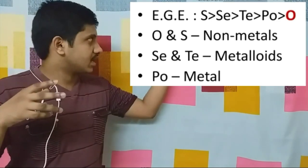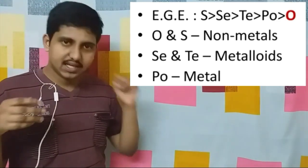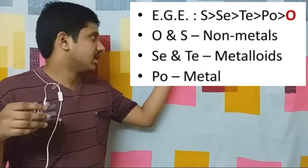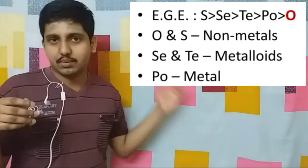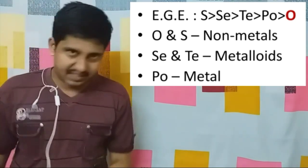So friends, group 16 elements — that is OCCTS — oxygen, sulfur, selenium, tellurium, and polonium. Oxygen and sulfur, as you know, are non-metals. Then comes our metalloids, and finally the metals.